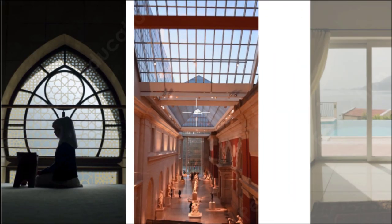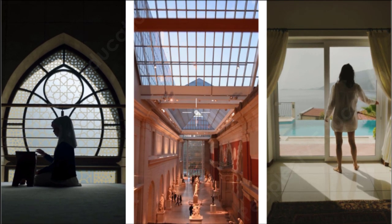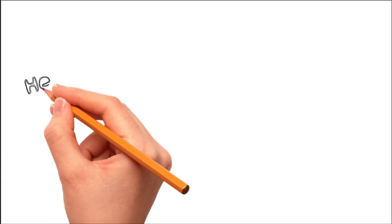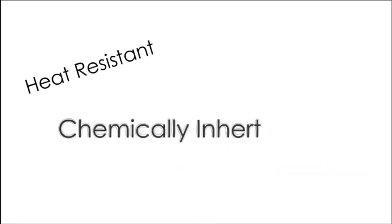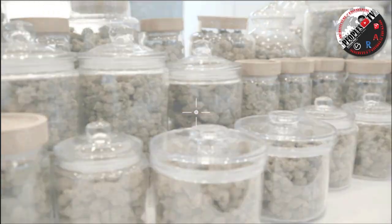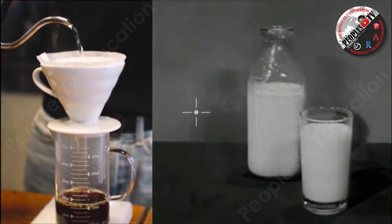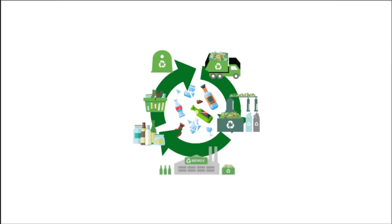Glass is such a popular material in our homes because it has all kinds of really useful properties. Apart from being transparent, it's inexpensive to make, easy to shape when molten, and reasonably resistant to heat when set. It is chemically inert, which means it doesn't react with other things — for example, a glass jar doesn't react with the things you put inside it, like hot water, wine, or milk. And it can be recycled any number of times.